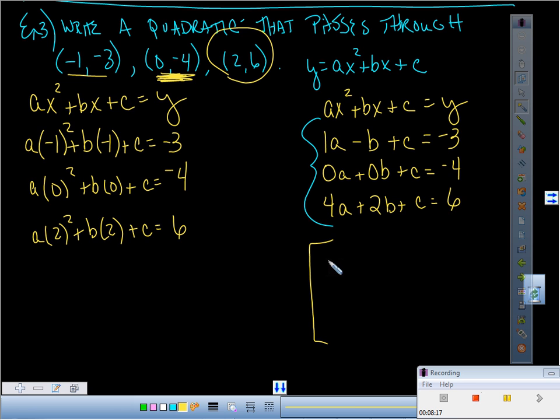Do y'all get 4A plus 2B plus C equals six? Perfect. So now let's see. We're dragging out of our memory people. What's my first row? The matrix with 1, -1, 1, -3; then 0, 0, 1, -4; and 4, 2, 1, 6.